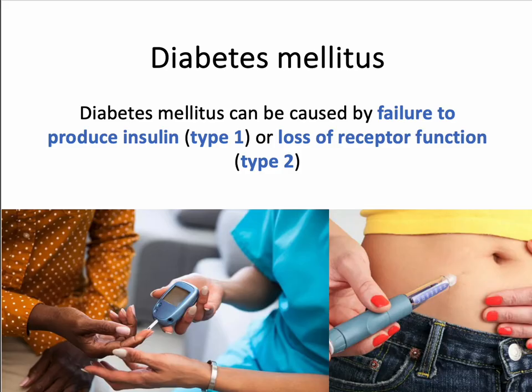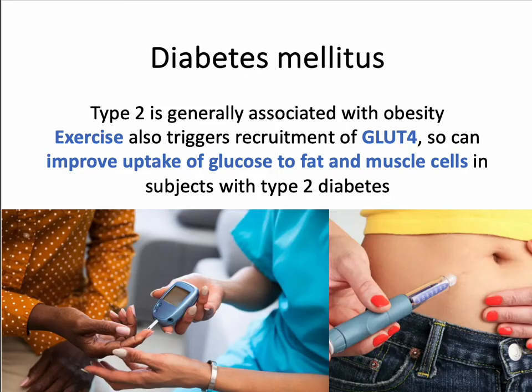Type two diabetes is different — you may have plenty of insulin with no issues whatsoever, but there is a loss of receptor function. Even if you have all the insulin available, if that receptor doesn't work, you won't have the phosphorylation cascade and GLUT4 won't be triggered. Type two is generally associated with obesity. One of the things we talk about for both prevention and management of type two is exercise, because exercise is also able to trigger the recruitment of GLUT4. So with more GLUT4-containing vesicles, you can improve the uptake of glucose to fat and muscle cells, which helps with type two diabetes.